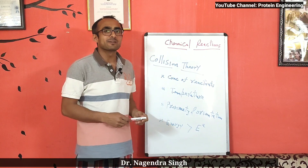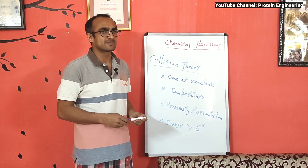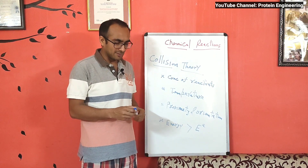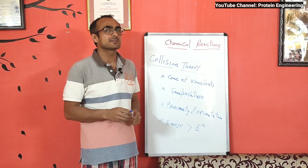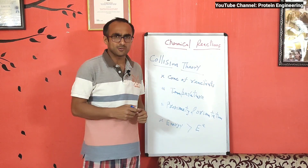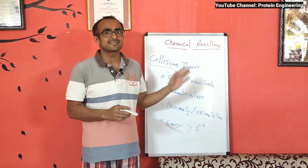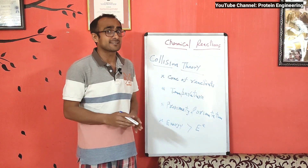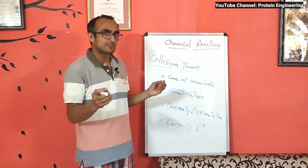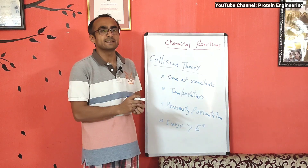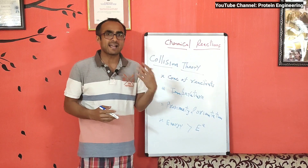Hello everyone, today we will talk about chemical reactions and enzymatic reactions. There are two major theories given to predict the rate of chemical reactions. One theory is collision theory. As per this theory, it is mainly applicable for the gaseous state when reactants are present in gaseous state. Reactants come together and collide with each other, and as a result the reaction takes place.